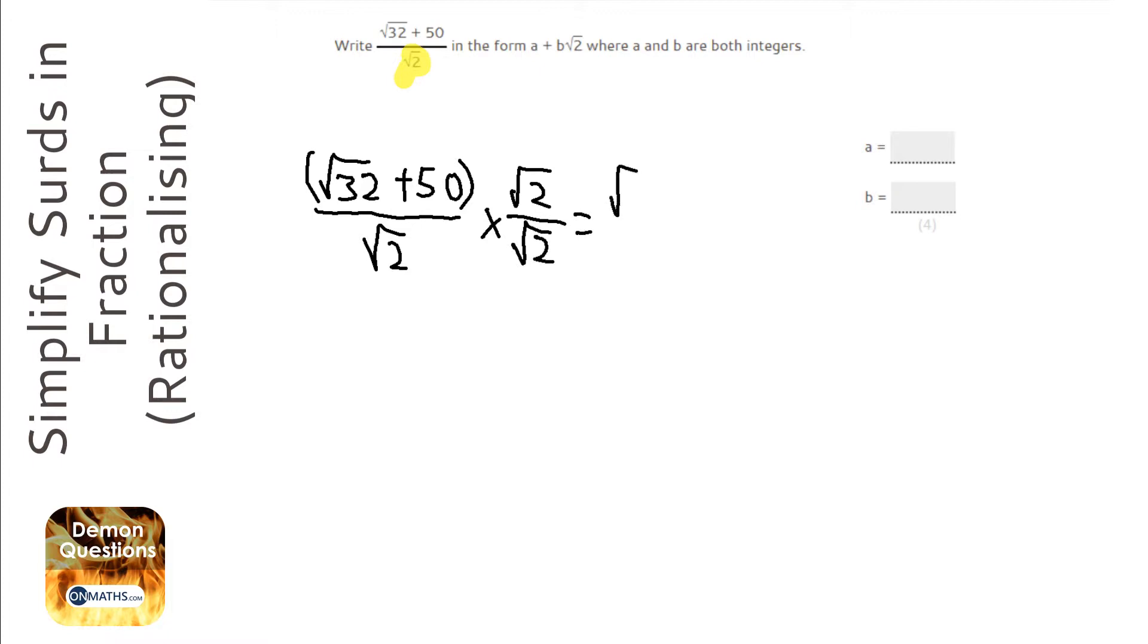So the top becomes root 2 times root 32 plus 50. Now, the bottom is root 2 times root 2, and we should have learnt by now that any surd times by itself is just the number inside the surd, the number inside the square root.